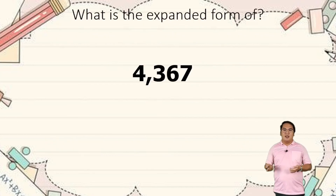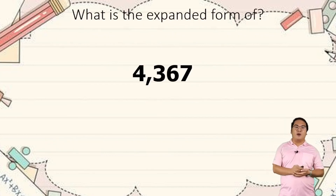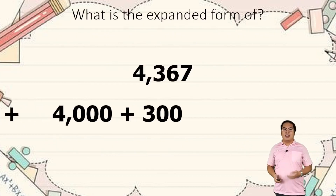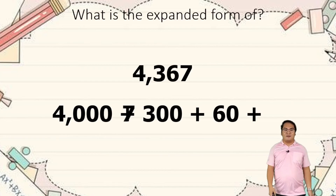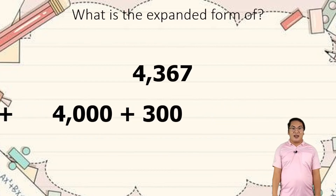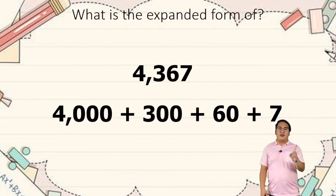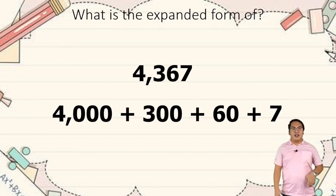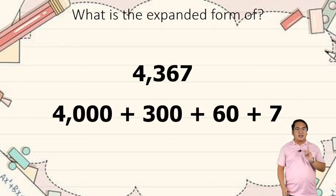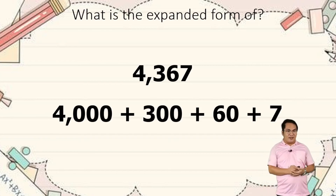Let's have this one. What is the expanded form of 4,367? So we have 4,000 plus 300 plus 60 plus 7.